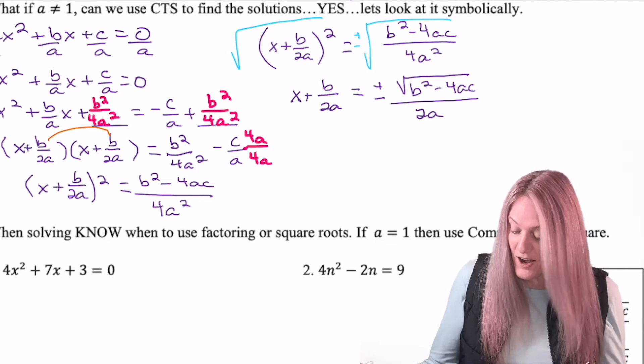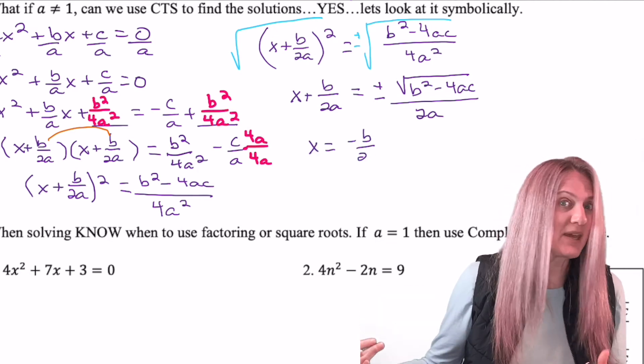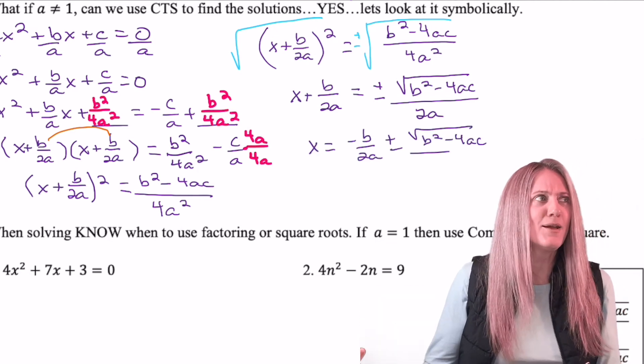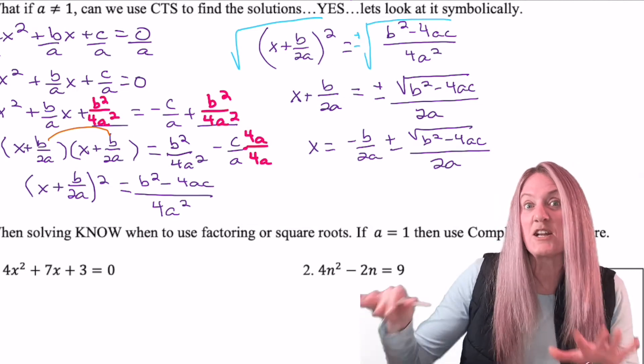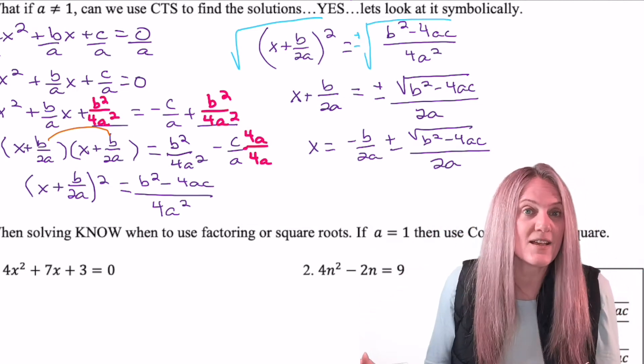Almost there. All we have to do now is subtract the b divided by 2a over and we have solved for x regardless of if a is 1 or not.